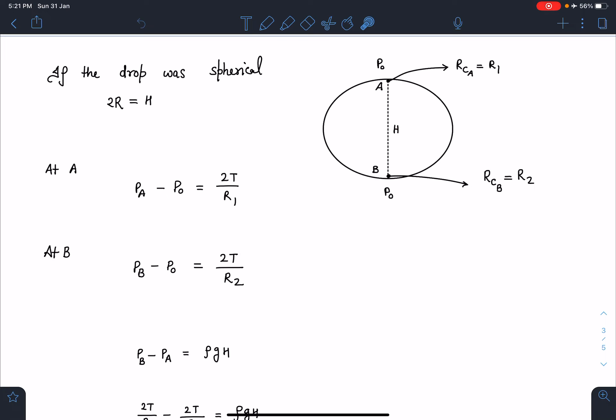We are going to use the excess pressure formula because the outside pressure is the same at A and B. At point A, the pressure is more because it is bulging. So P_A minus P_0 equals 2T/R1. Similarly, P_B minus P_0 equals 2T/R2, which is the radius of curvature here.